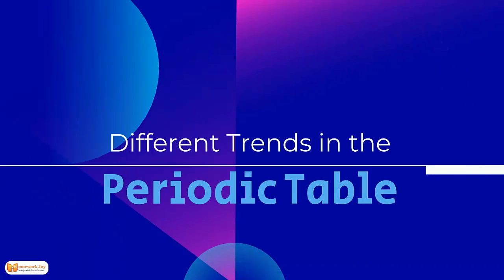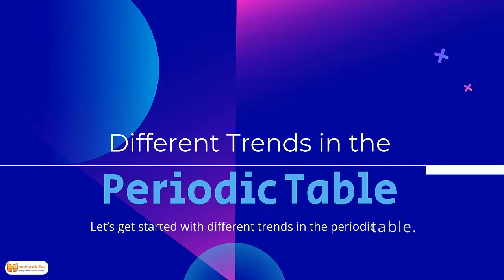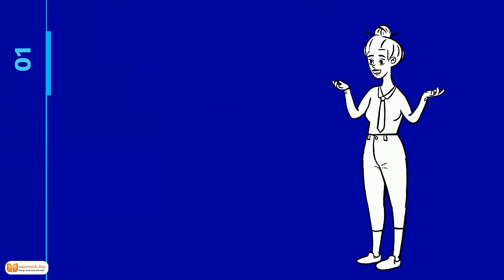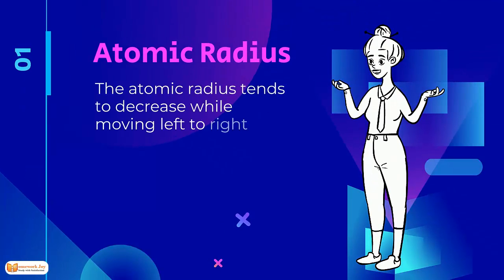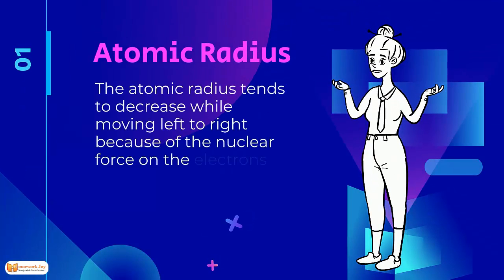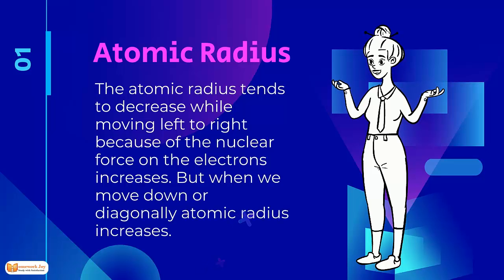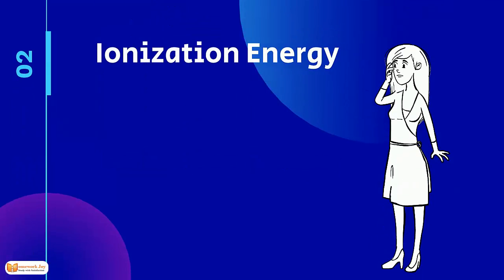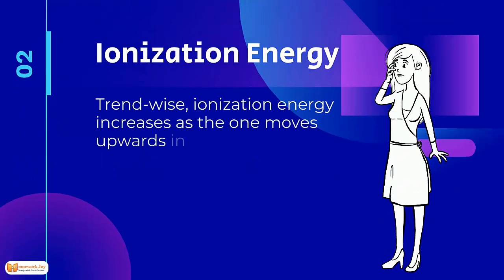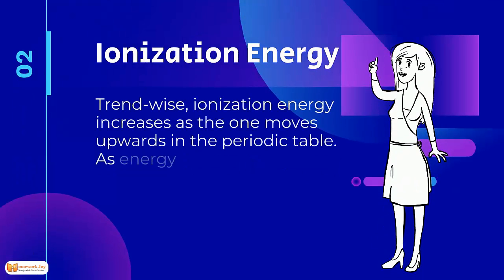Trends in the periodic table. The atomic radius tends to decrease while moving left to right because the nuclear force on the electrons increases. When we move down, atomic radii increase. Ionization energy increases as we move upwards in the periodic table, meaning more energy is required to remove electrons.